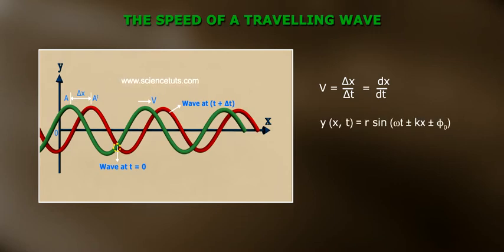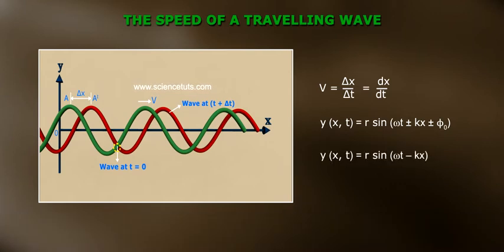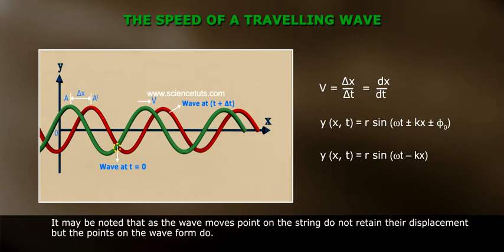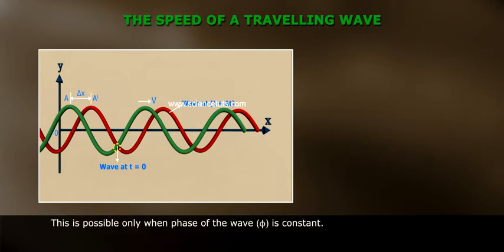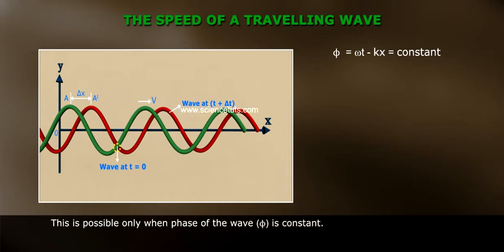The general wave equation is y(x,t) = r sin(ωt ± kx ± φ₀). The equation of the wave is y(x,t) = r sin(ωt - kx). It may be noted that as the wave moves, points on the string do not retain their displacement, but the points on the waveform do. For example, a point like A marked on a peak of the waveform goes over to the corresponding point A' on the peak of the displaced waveform. This is possible only when the phase of the wave φ is constant, that is, φ = ωt - kx = constant.